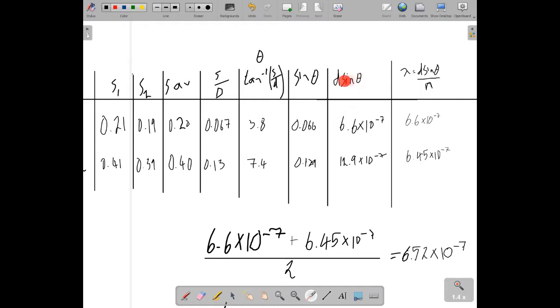I have d sine theta as my next step. So that's taking this value and then multiplying by little d, which is the slit separation on the diffraction grating. I earlier on calculated that my slit separation was 1 times 10 to the minus 5, because of my slit separation being 100 lines per millimetre.